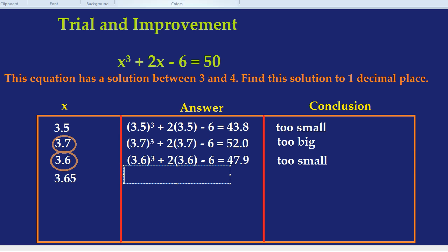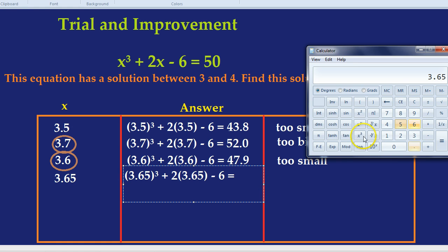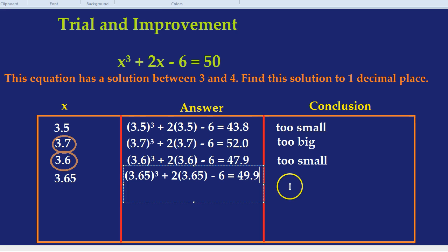Let's try that then. We have 3.65 cubed plus 2 times 3.65, take away 6. And what does that equal? Let's go to our calculator. 3.65 cubed plus 2 times 3.65, take away 6. That's 49.92, so 49.9. Now you might be tempted to write bang on, as in we've got it. But actually it's still too small. We were aiming for 50, so 49.9 is still too small. So what's our final answer going to be?